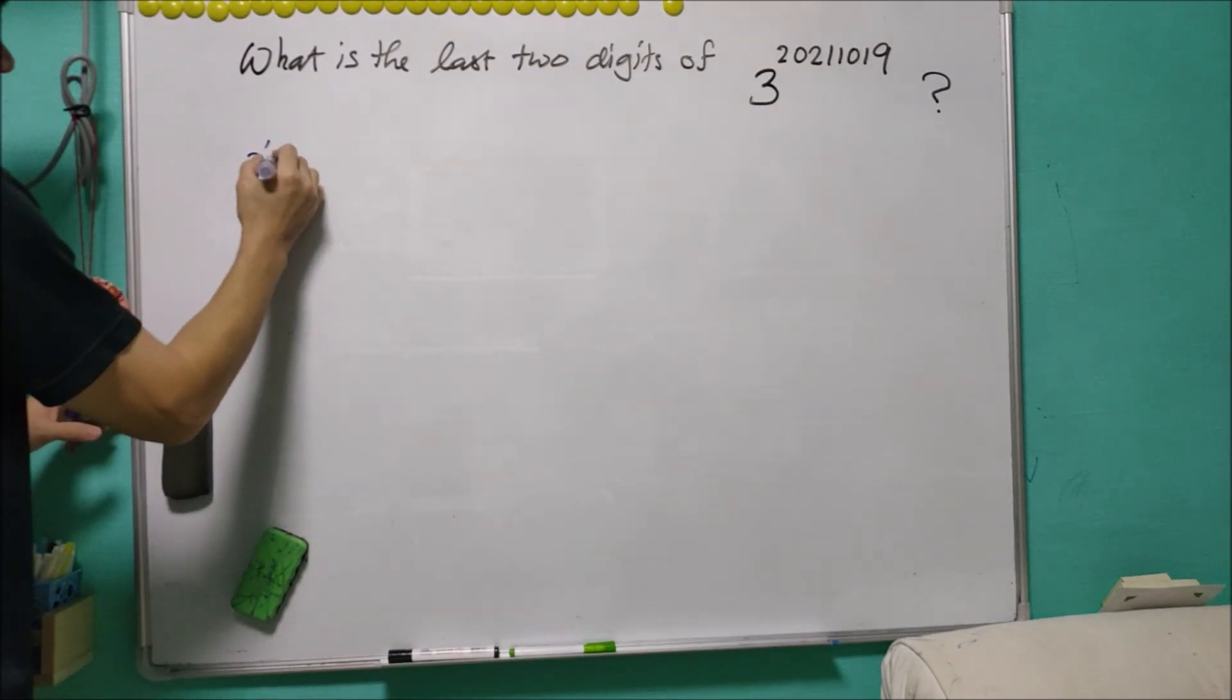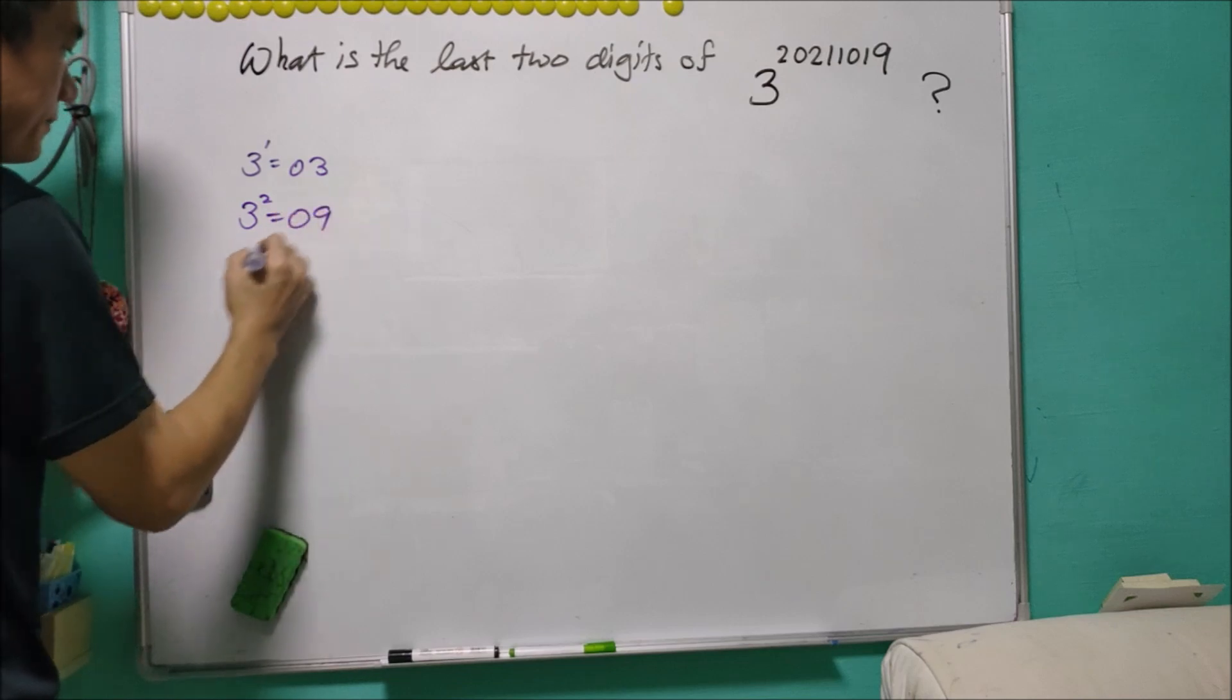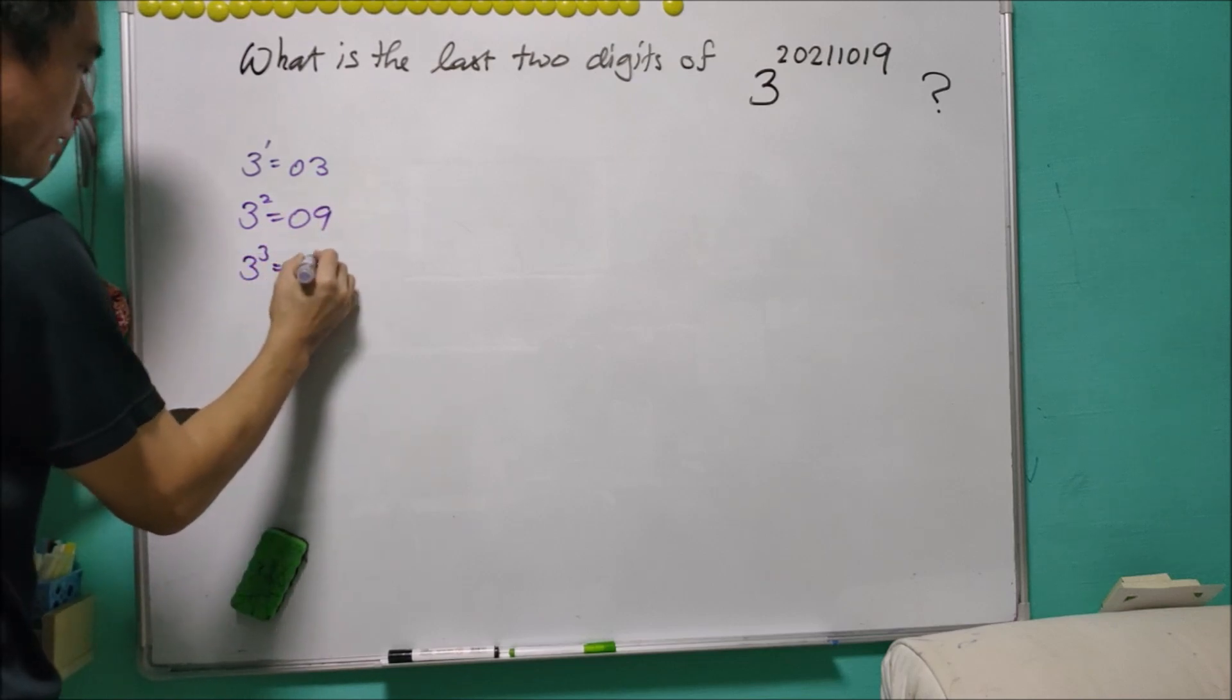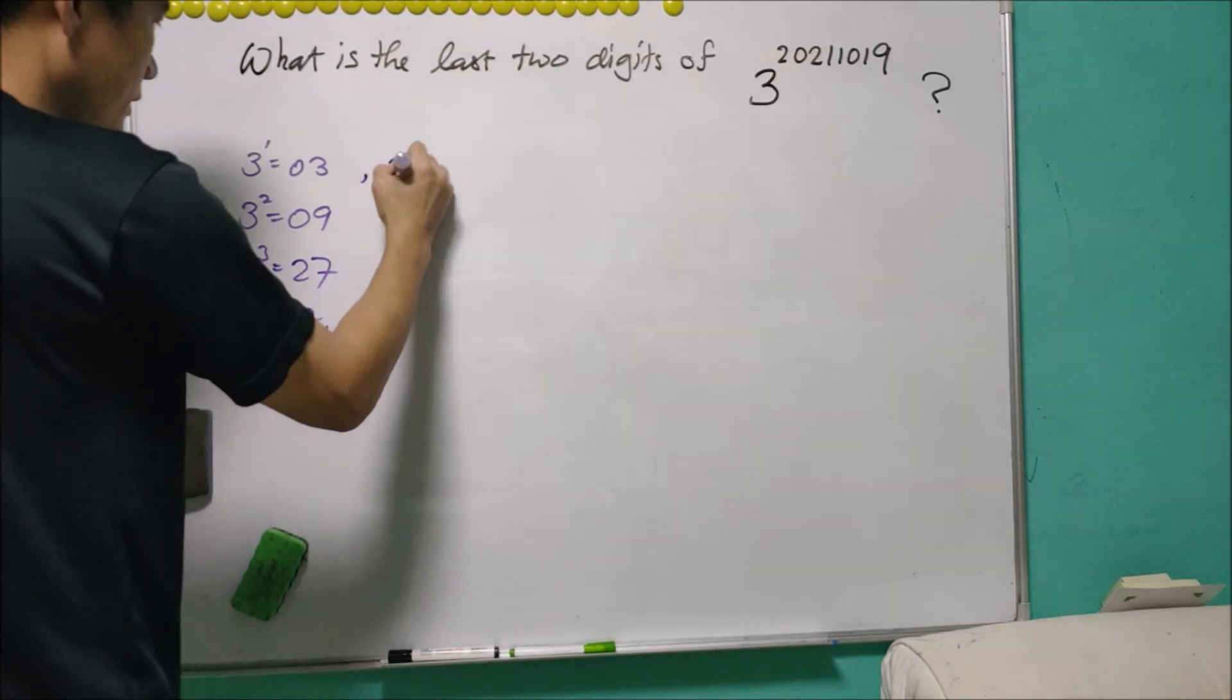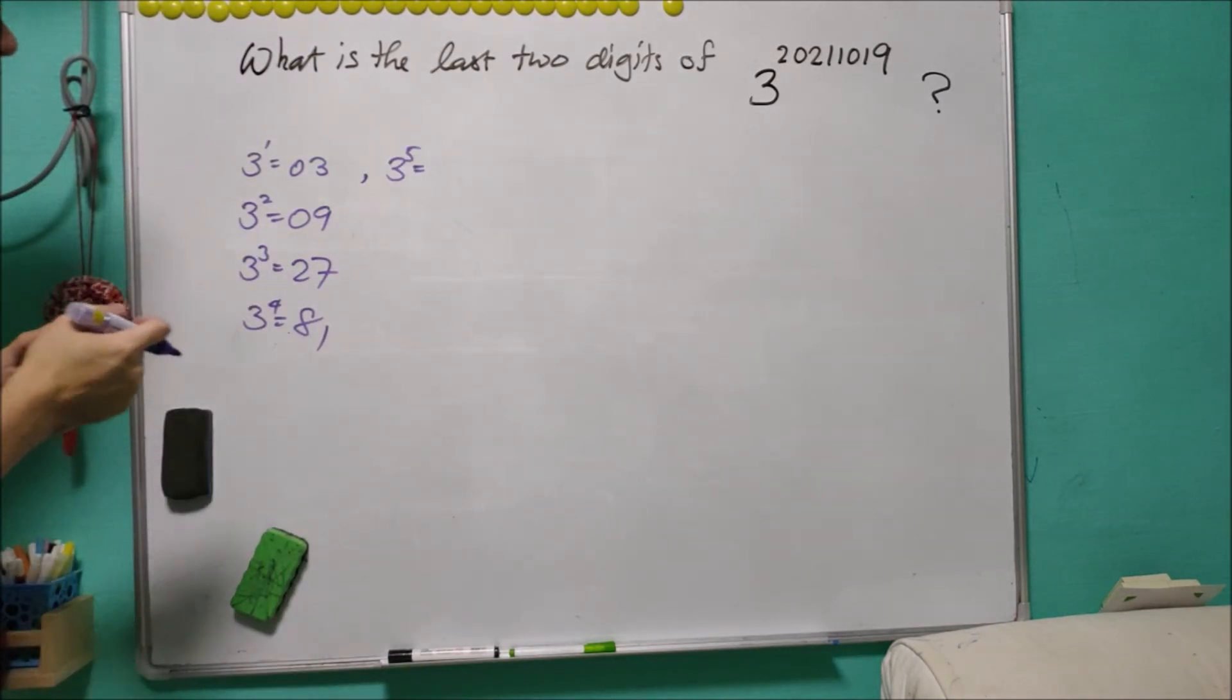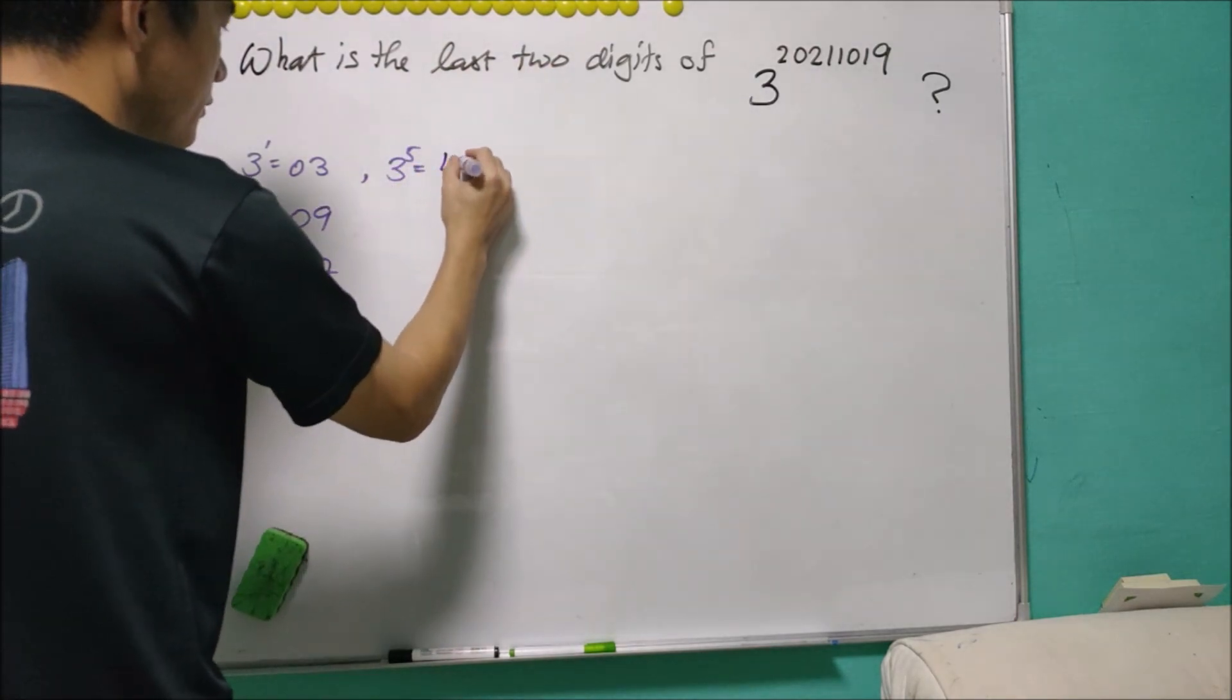What we present here is only for the last two digits of 3 to the power of n. So we start with 3^1 equals 03, 3^2 equals 09, 3^3 equals 27, 3^4 equals 81. Power of 5 is 243. We only want to consider the last two digits, so this is 43.